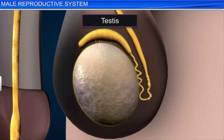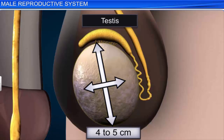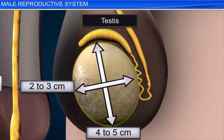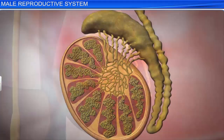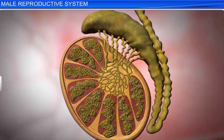The testes are oval in shape, with a length of about 4 to 5 centimeters and a width of about 2 to 3 centimeters. The testes are surrounded by a tough connective tissue capsule called the tunica albuginea. Each testis has 250 compartments called testicular lobules.